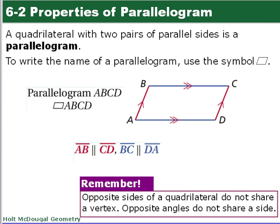All right, so a quadrilateral with two pairs of parallel sides is called a parallelogram. See how appropriate that name is? To write the name of a parallelogram, you're going to use the symbol - it looks like a parallelogram - along with the four vertices that make up that parallelogram.